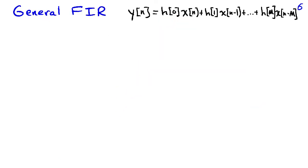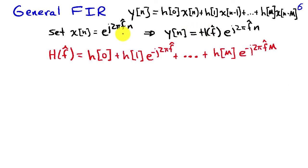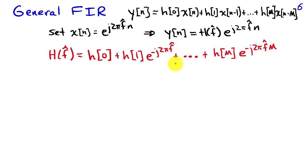The approach from these two examples generalizes to an arbitrary FIR filter: h(0) x(n) + h(1) x(n-1) + ... + h(m) x(n-m). To find the frequency response, we put in a complex sinusoid at frequency f-hat, and the output y of n equals H(f-hat) times e to the j 2 pi f-hat n. The frequency response H of f-hat is h(0) + h(1) e to the minus j 2 pi f-hat + ... + h(m) e to the minus j 2 pi f-hat times m. In the previous two examples, capital M was equal to one.